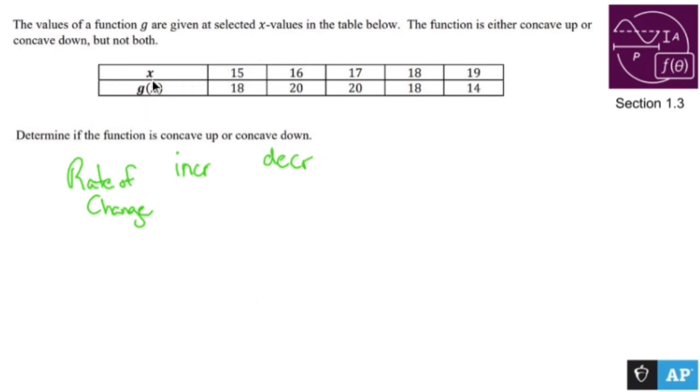The way you find the rate of change is you go to your table. You make sure that the x values are going up by the same number, which they are. These are called equal length input value intervals. And then you see what's going on here.